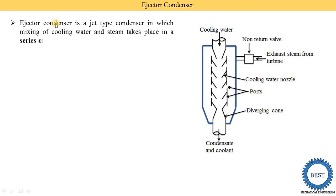Injector condenser is a jet type condenser. Basically there are two types of condensers: jet condenser and surface type condenser. Jet type means here the steam and the water is directly mixed.